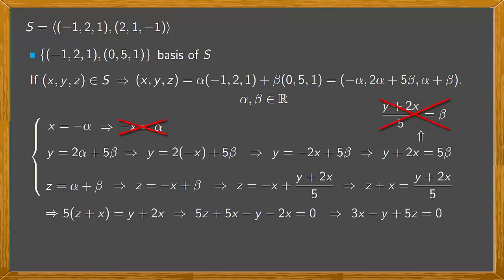Notice that we no longer have any equations involving parameters. So we're done. And the Cartesian equations of S are the equations without parameters that we've obtained. In our case that's just 3x - y + 5z = 0. So we conclude that S is the (x, y, z) in R³ such that 3x - y + 5z = 0. And that subspace is given by this Cartesian equation.